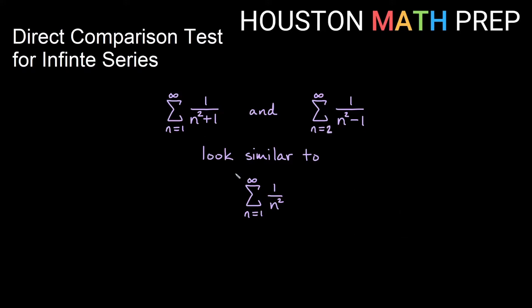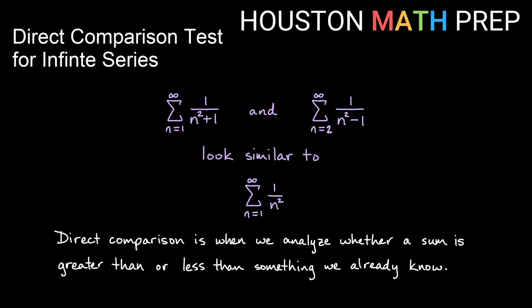So here what we want to see is we have the series 1 over n² + 1 and 1 over n² - 1. These are going to behave and obviously look very similar to the infinite series 1 over n². What we'll do with the direct comparison test is analyze a sum that we are trying to figure out by comparing it to something that we already know the behavior of. Since we likely already know the behavior of the series 1 over n² — because it's a p-series — we should be able to use our knowledge of this to look at some of these.